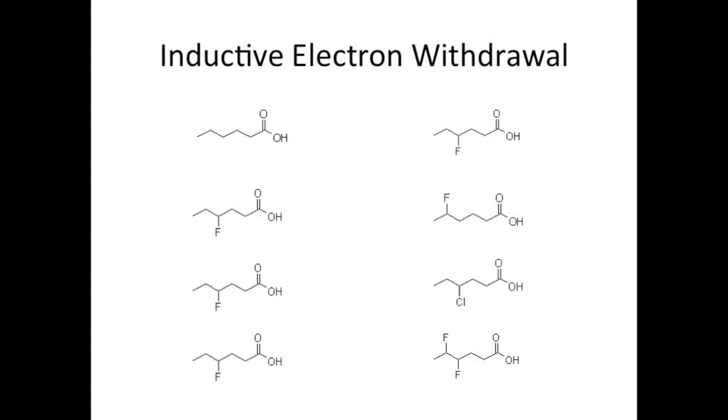And finally, how many halogens are substituted in matters. More halogens equals more pull. So, the one on the right will be more acidic. It's pretty simple.